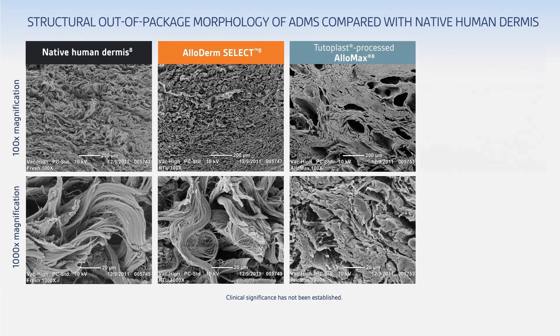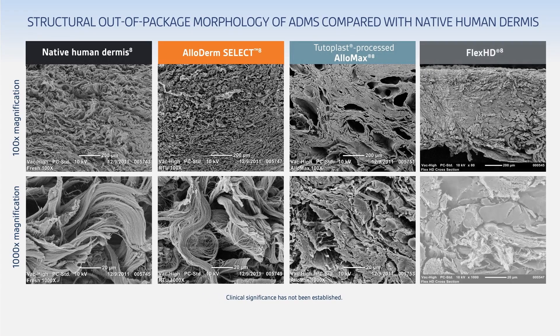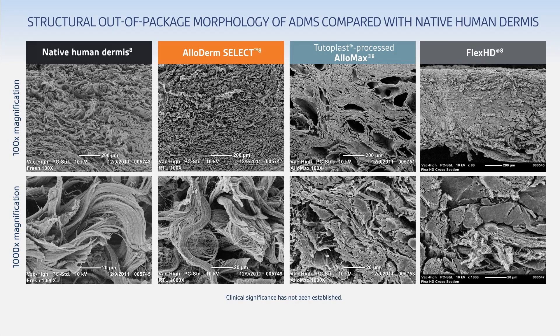The third and fourth columns tell a different story. Here we see the results of processing methods that damage the matrix: condensed, compacted collagen, and the lack of evident fibrillar structure.